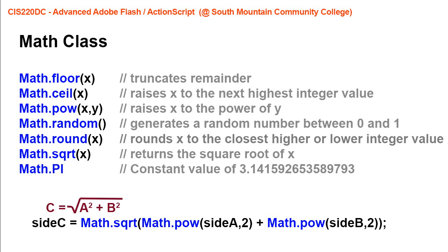ceil refers to ceiling, and it is a method of the Math class that takes the next highest integer above the value of x. pow is a method that raises x to a power of y. Notice in the parentheses there we have two arguments that are provided: x and y.